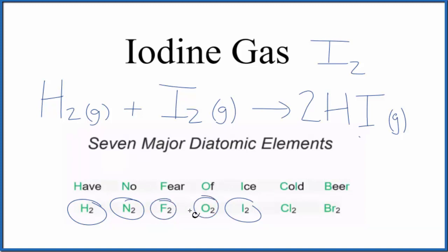Hydrogen, nitrogen, fluorine, oxygen, iodine, chlorine, and bromine. These will all be diatomic when we say hydrogen gas or oxygen gas.